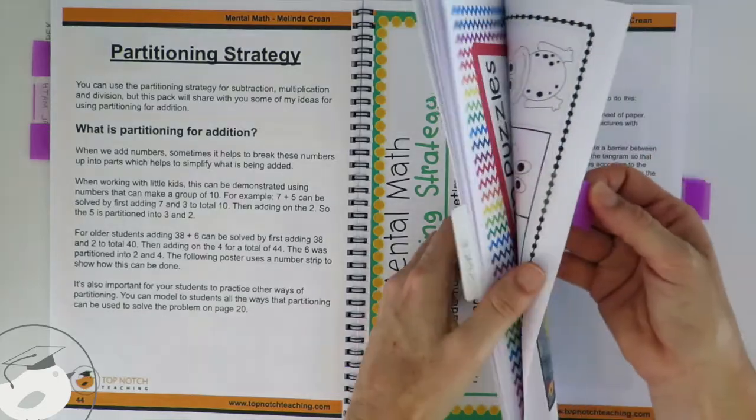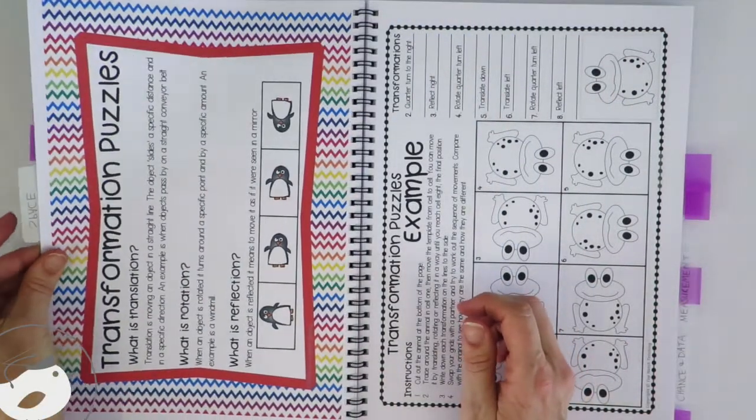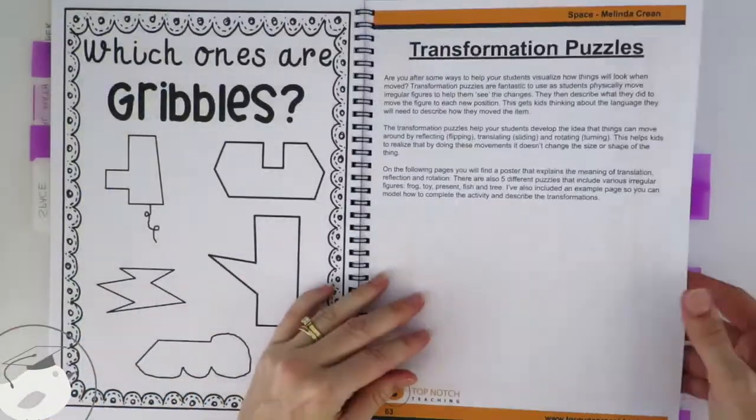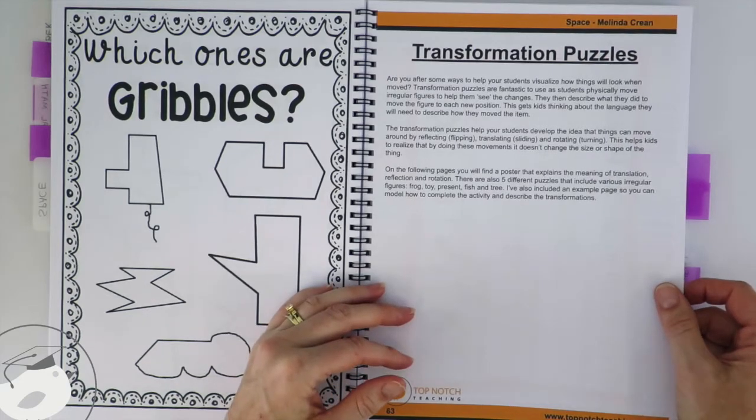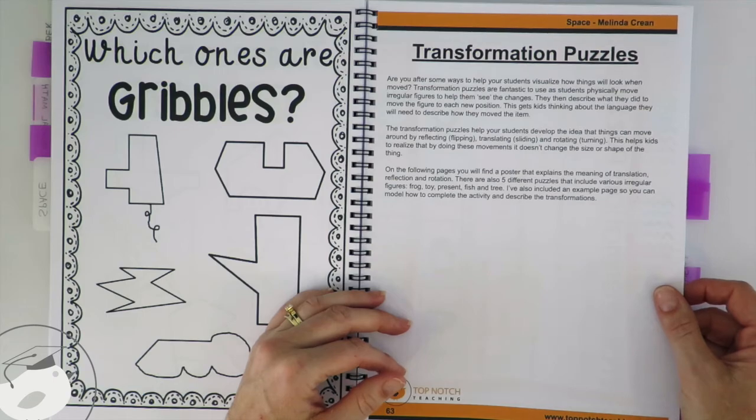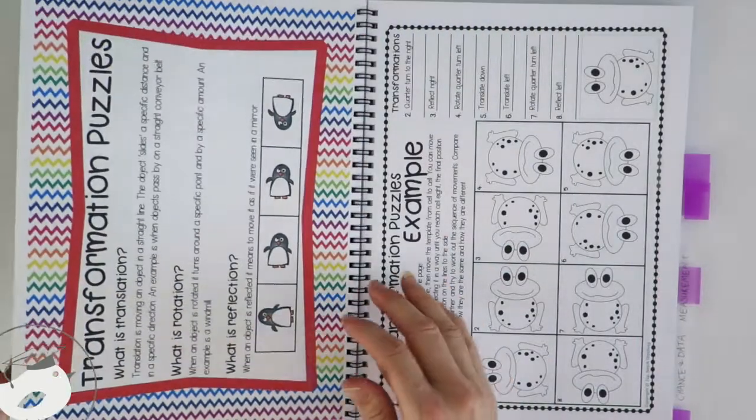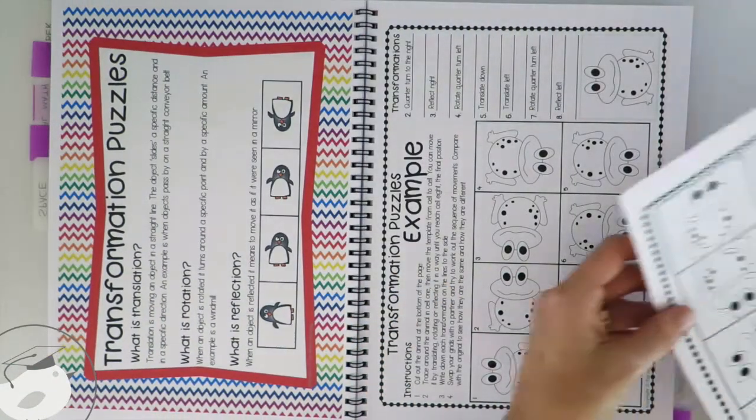All right, the next one we're going to have a look at is my transformation puzzles. So if you're doing a bit of work on space and you'd like to help your students visualize how things look when they're moved around, then there's a really great little activity that you can try with them.